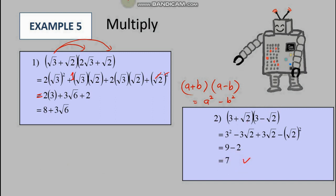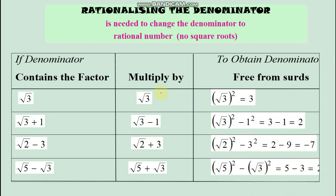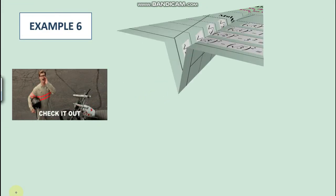Now we want to rationalize the denominator, but first we need to understand the concept of conjugates. Not only complex numbers have conjugates — surds also have their own conjugates. If you have √3, you need the conjugate √3 to eliminate the root sign. For √3 + 1, you just take the opposite middle sign: the conjugate is √3 − 1. Similarly, the conjugate of √2 − 3 is √2 + 3.